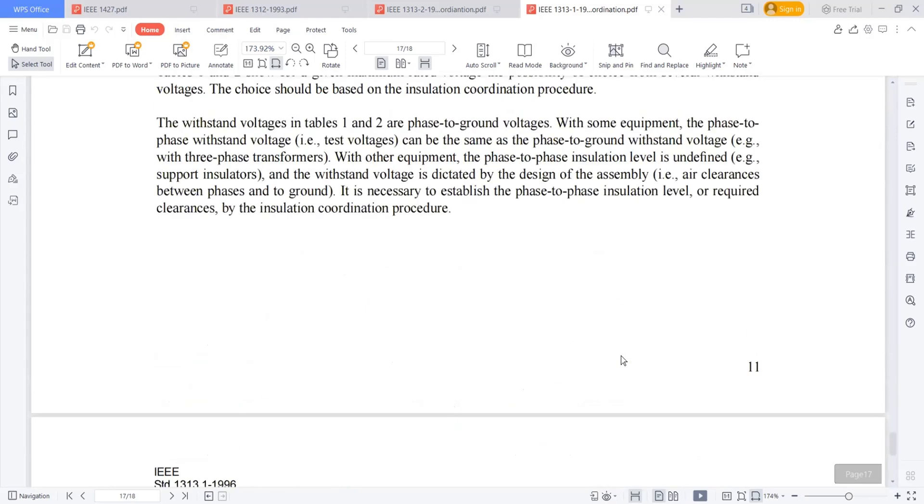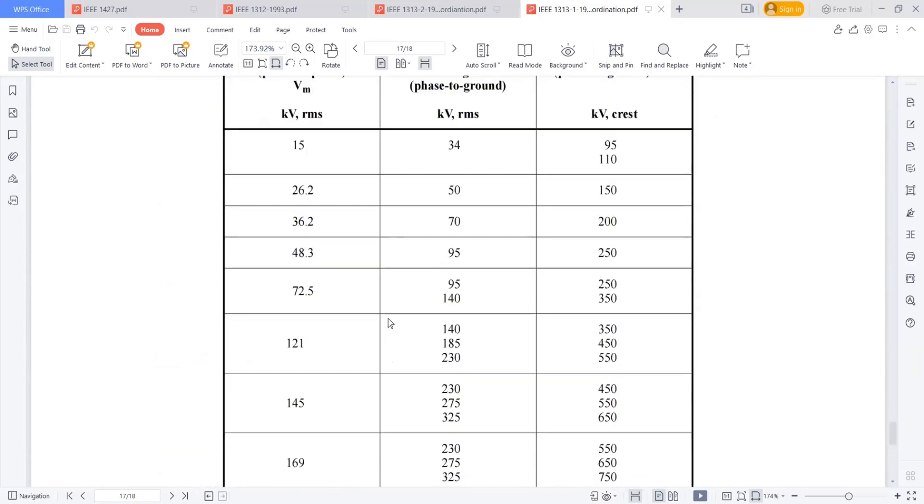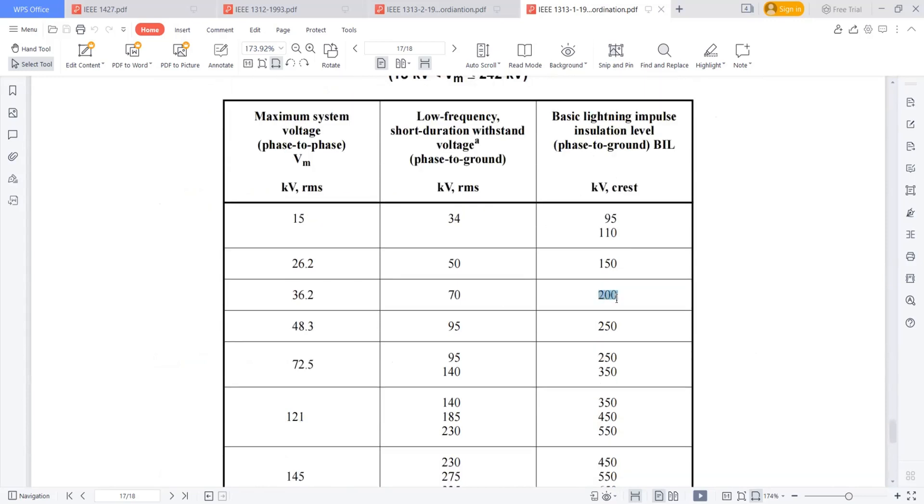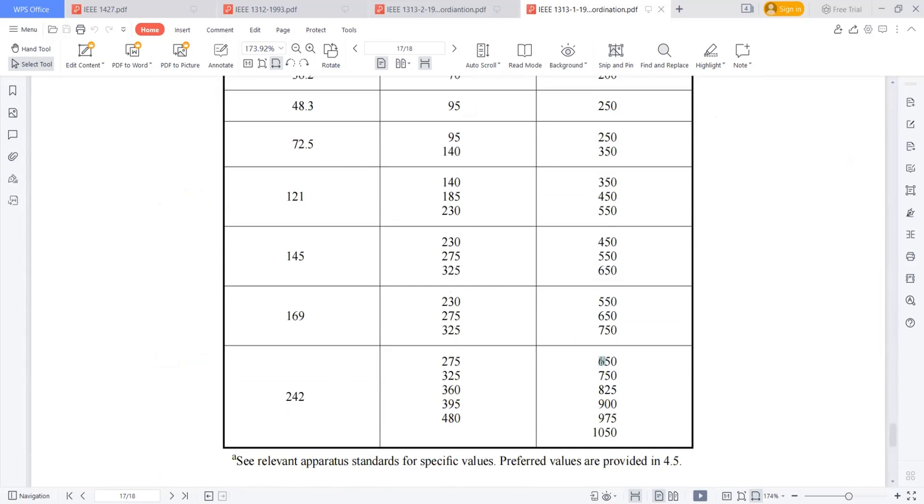It is a standard kind of thing. Suppose if mine is 33 kV, the BAL level is 200 kVp, and the low frequency short duration withstand voltage is 70 kVp. And for 220 kV, these are the values you can see.